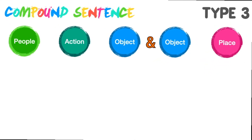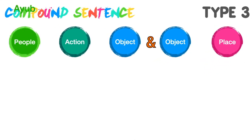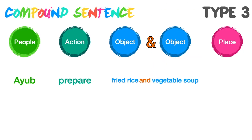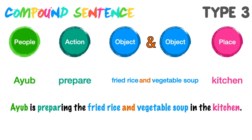Contoh yang berikutnya supaya adik-adik lebih faham. Kita bagi nama orang. People: Ayub. Action: Prepare — menyediakan. Objek yang pertama: Fried rice. And objek yang kedua: Vegetable soup. Place: Kitchen. The full sentence — altogether: Ayub is preparing the fried rice and vegetable soup in the kitchen. Ayub menyediakan nasi goreng dan juga sup sayur di dapur. Sangat mudah untuk adik-adik. Kita ada tiga compound sentence: Type 1, Type 2 and Type 3. Type 1 ada dua People. Type 2 ada dua Action. Type 3 ada dua Object.